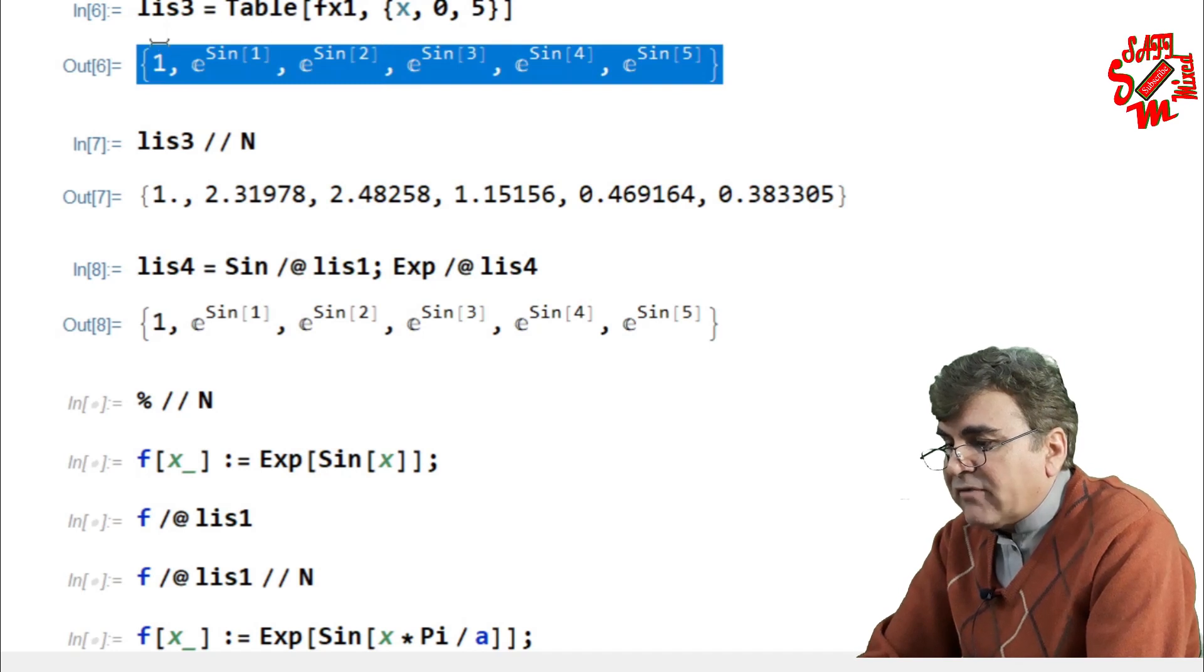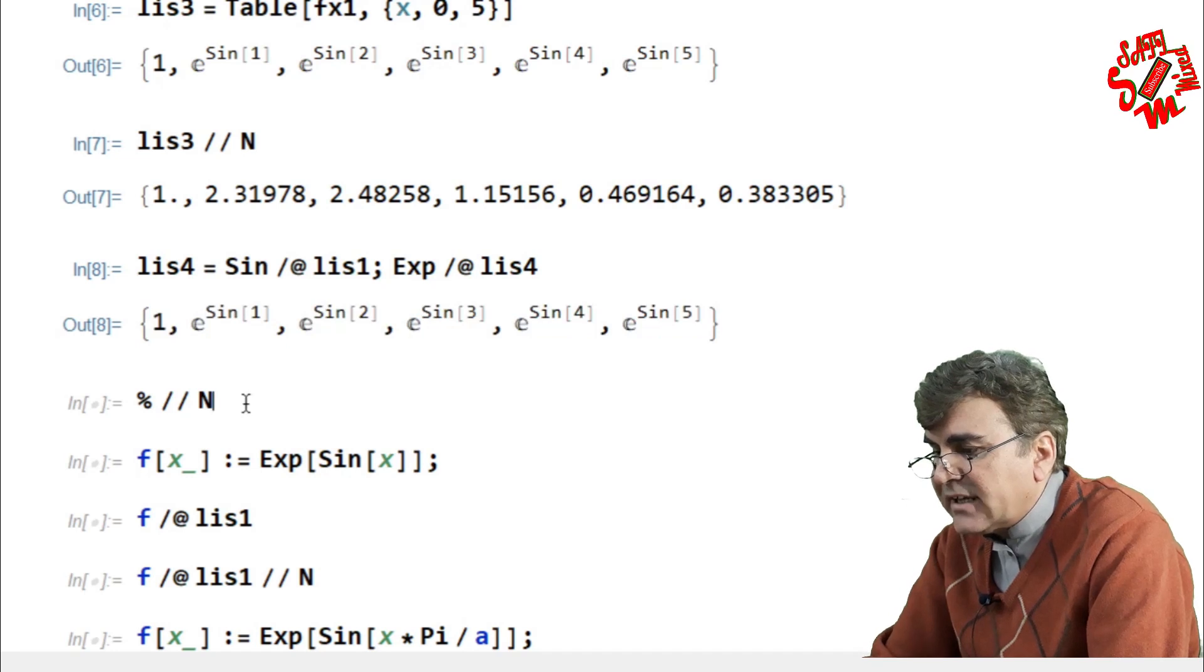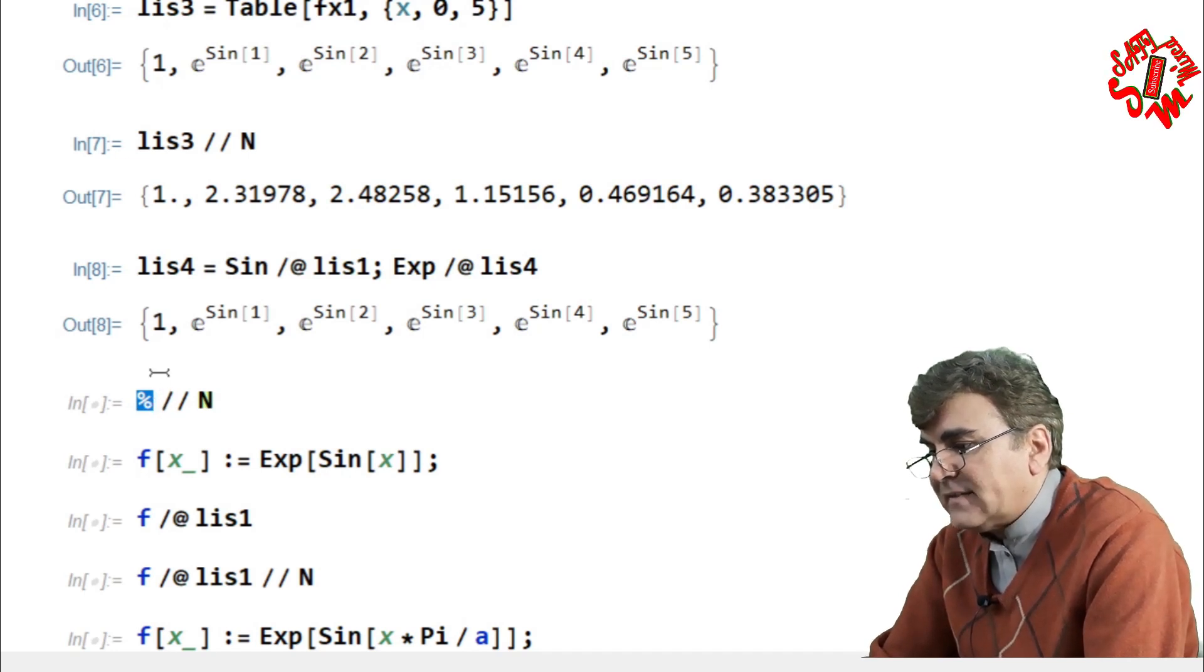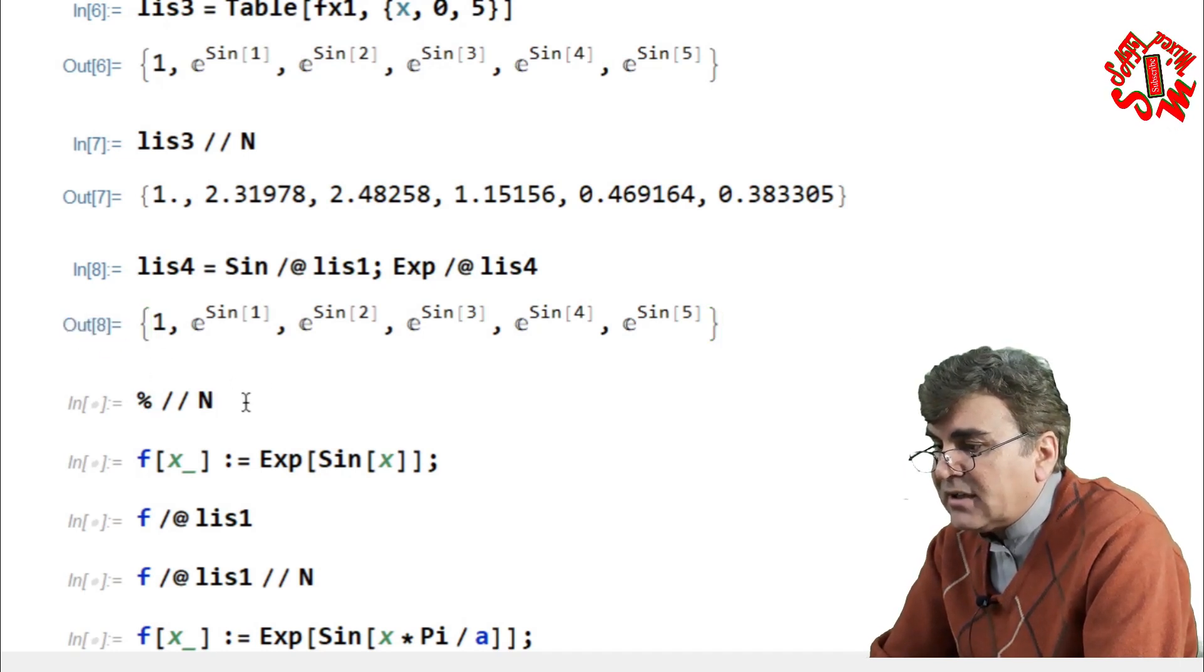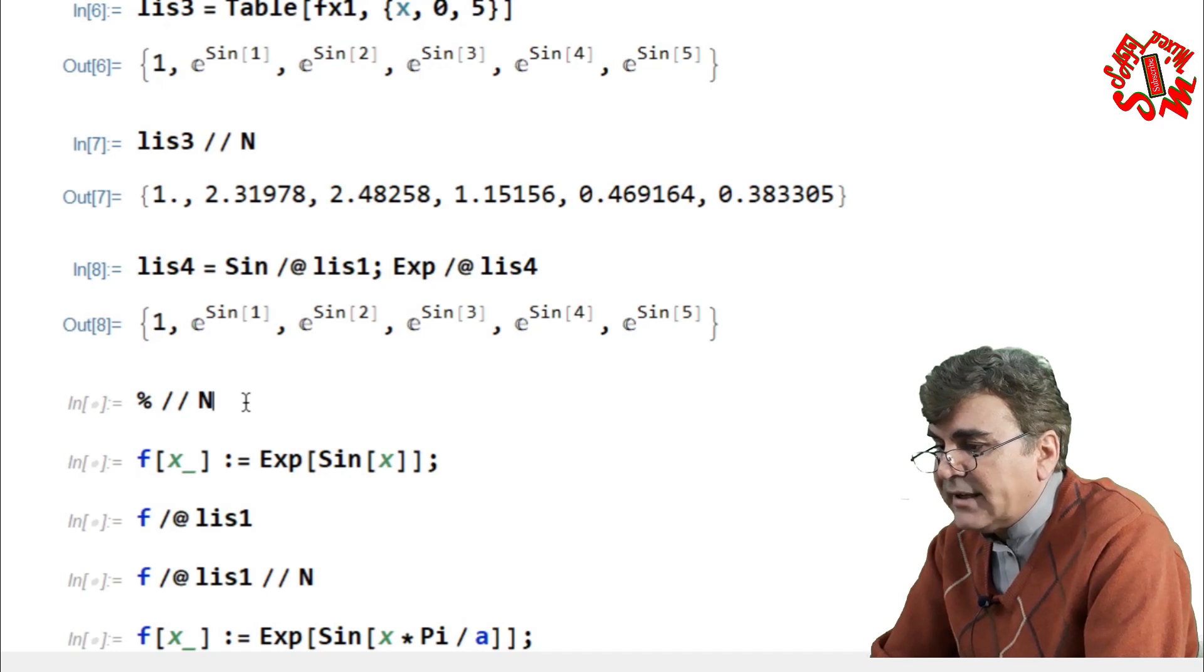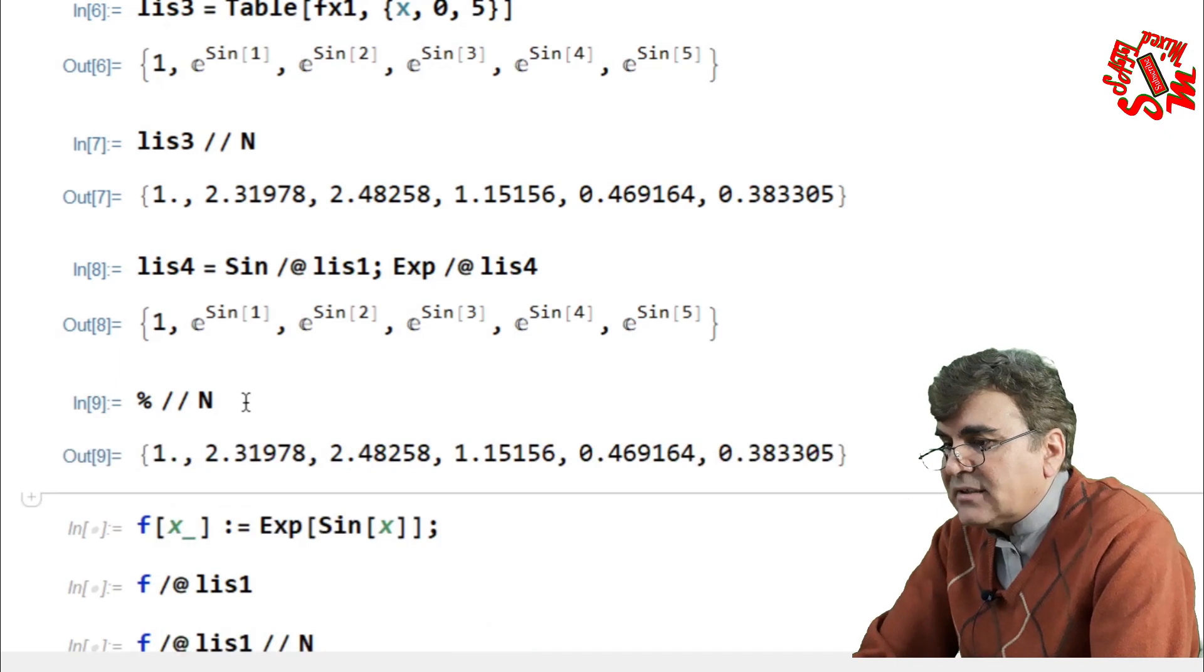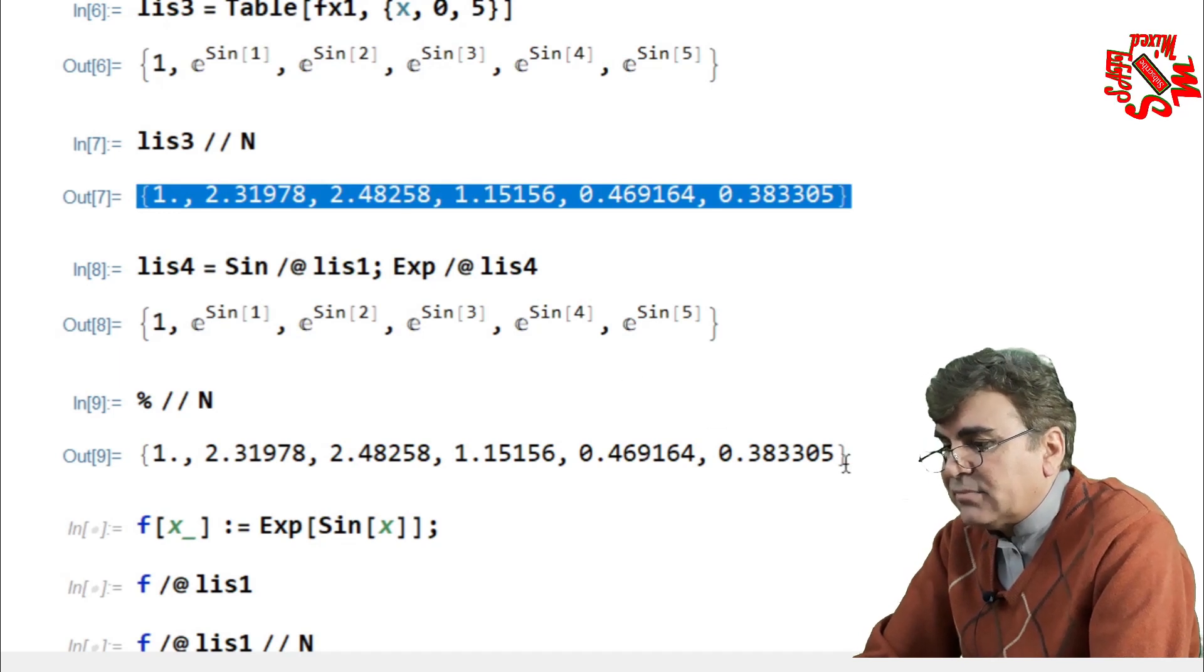And if I want to find the numerical values I just put this percent sign. The percent sign in Mathematica is used for taking the value from one output ahead. Like in this case this is output eight. So if I use this, the percent calls Mathematica to take the values from this list and I have the same values as in this list. If you compare this list and this list they are exactly term by term equal.